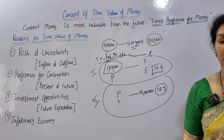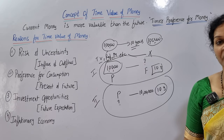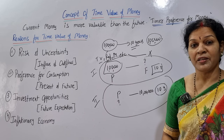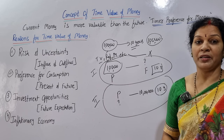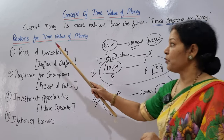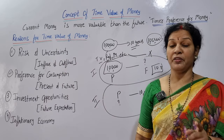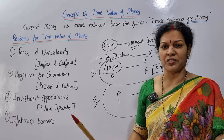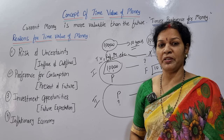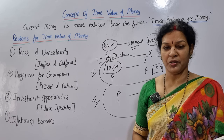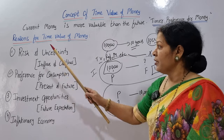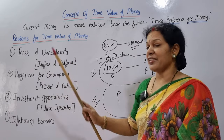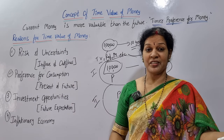Why do we calculate Time Value of Money? Why do we have to learn this? There are mainly four reasons. Understanding these concepts will make it easy for us to go into practicals in the next classes. So the reasons for Time Value of Money — the first reason is risk and uncertainty.